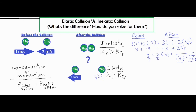That tells us two things about this two kilogram object: it's traveling at a rate of one meter per second, and because it came out positive, the object bounced to the right at one meter per second. Next, we're going to use our kinetic energy formula — one half MV squared — and solve for the kinetic energy for both objects before and after the collision to see if it is inelastic or elastic.